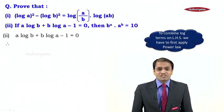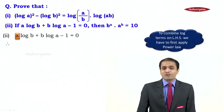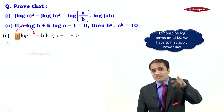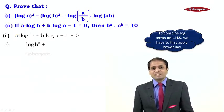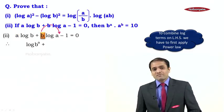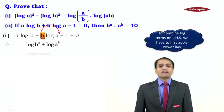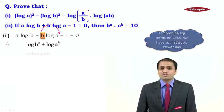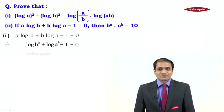Applying the power law: a times log b — here a becomes the power — gives log(b^a). Similarly, b times log a — b becomes the power — gives log(a^b). So we now have log(b^a) + log(a^b) − 1 = 0.